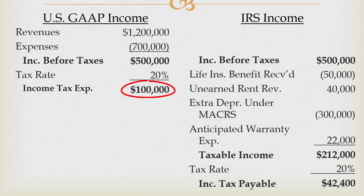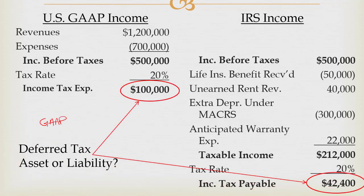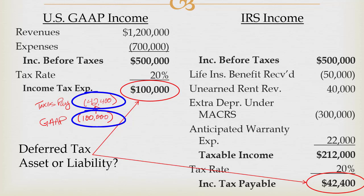So we have a difference between income tax expense at $100,000 and income tax payable at $42,400. Is that a deferred tax asset or a deferred tax liability? The easiest way to think about this is to look at the difference: income tax expense under GAAP is $100,000 and our taxes payable for tax purposes is only $42,400. It's higher than my tax number — I'm paying less than I think I should have to — so that's a deferred tax liability, because I'm going to pay less now, which means I'll pay more in the future.